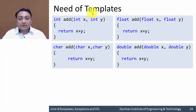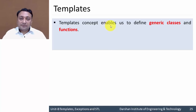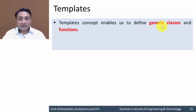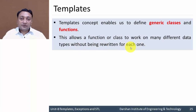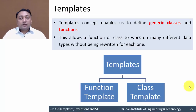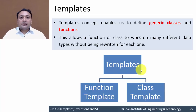Suppose we have a data type that will work for any type of data — then we need to write only a single function and we can pass any type of data to perform addition. That can be accomplished using the concept of templates. Templates enable us to define generic classes and generic functions, or generalized classes and generalized functions, that will work for any type of data. Templates allow a function or class to work on many different data types without being rewritten for each one. There is no need to write the 'add' function four times for four different data types.